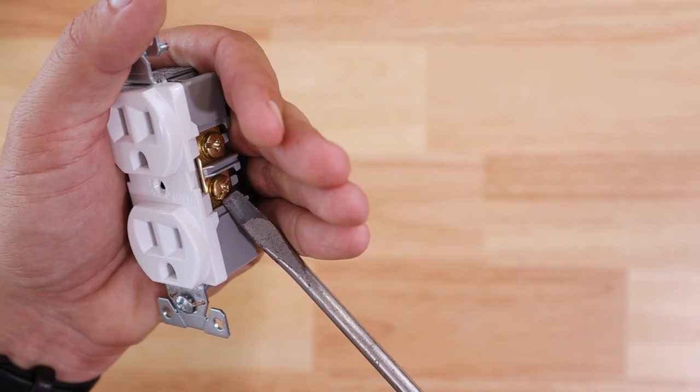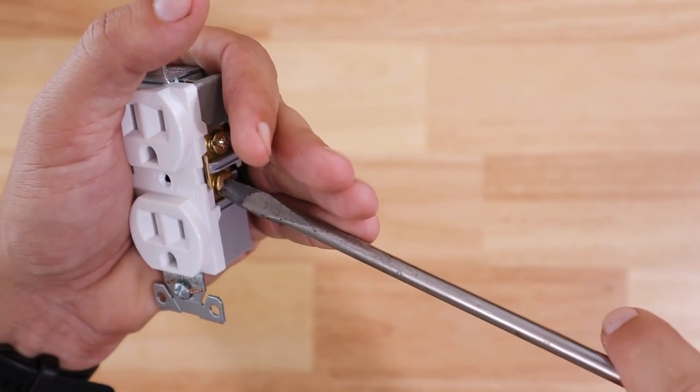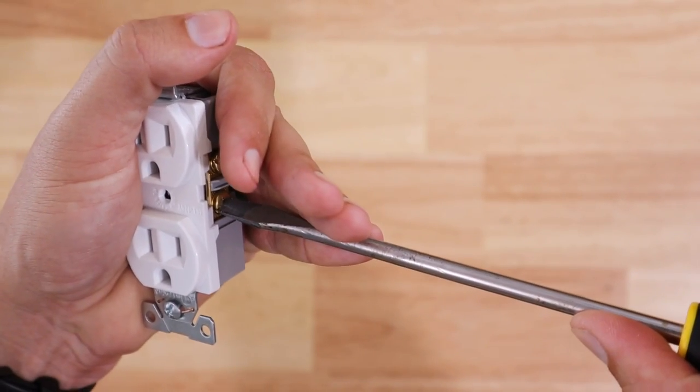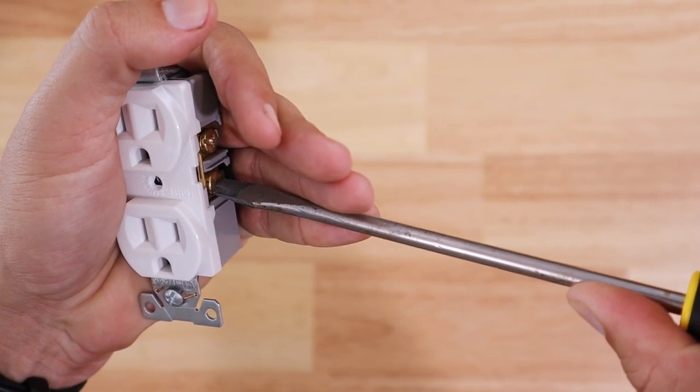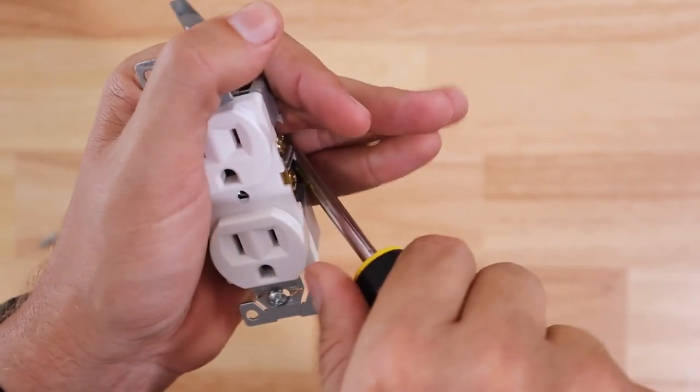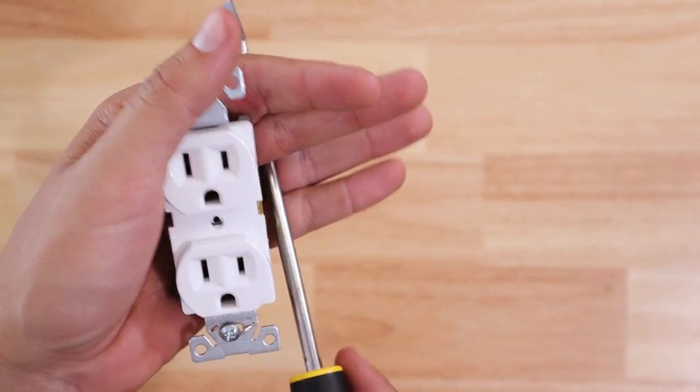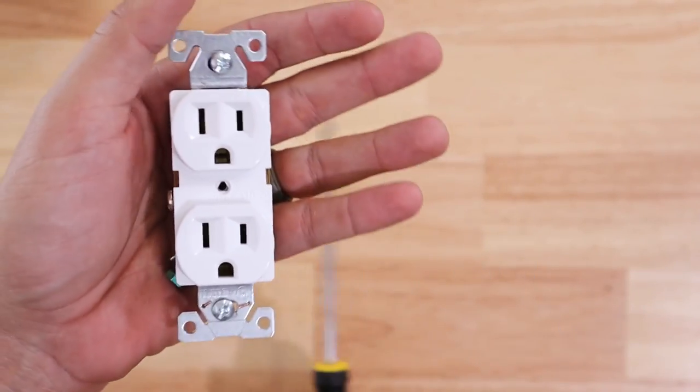You take a flatheaded screwdriver and you get to where you really need to tighten it down where you're really putting a lot of force on it. But what happens? That flathead screwdriver slips out and it stabs your hand. And I've had it to where it's actually cut my hand a little bit.